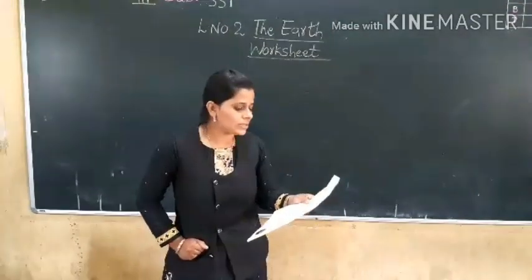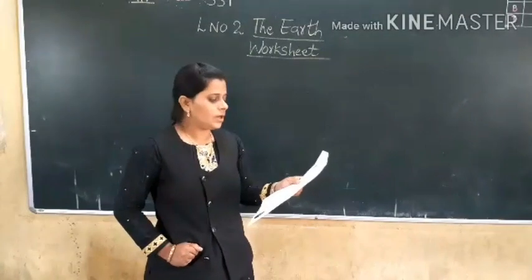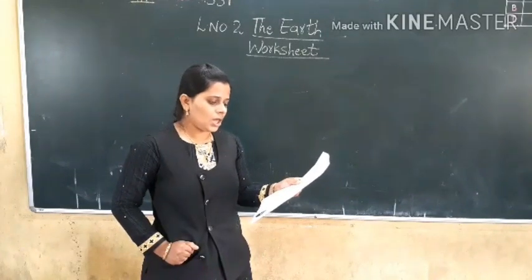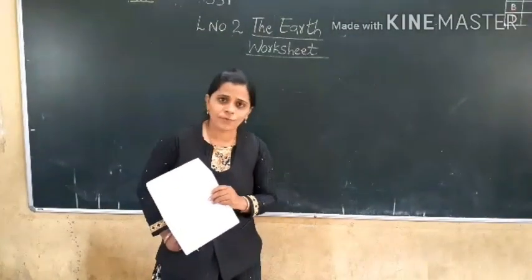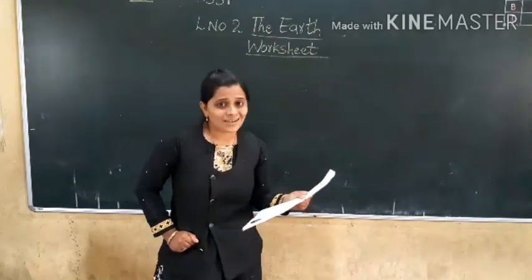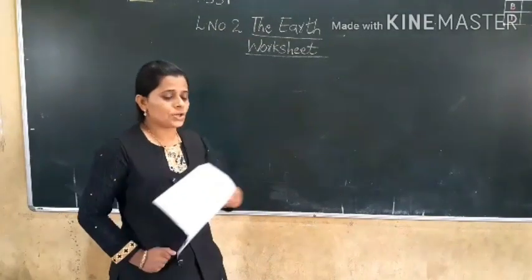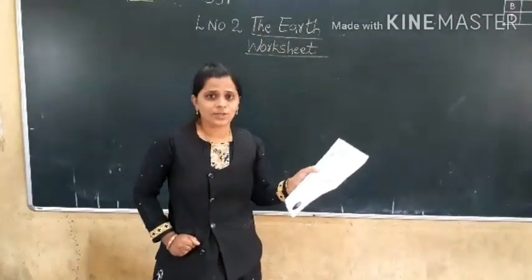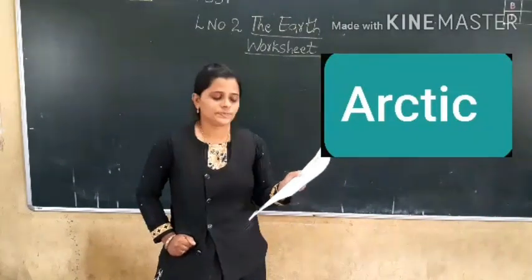Now the second question: Which one of these is not a continent? The options are: Antarctica, Arctic, Australia, North America. I am explaining about the seven continents and four oceans. Here, option B — Arctic — is not a continent; it is an ocean. So which one of these is not a continent? B, Arctic, is not a continent. Take a mark.